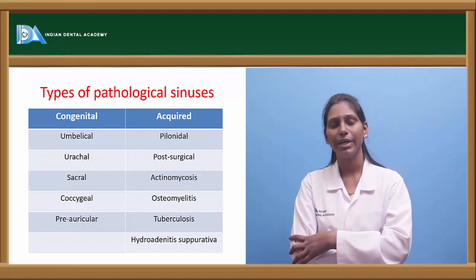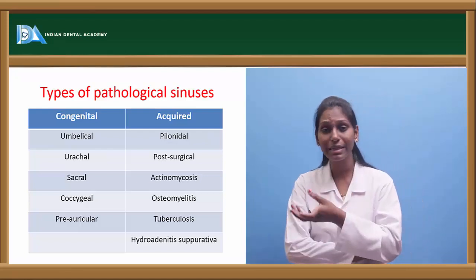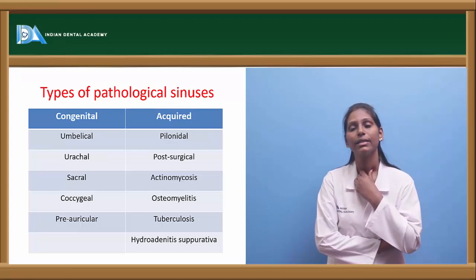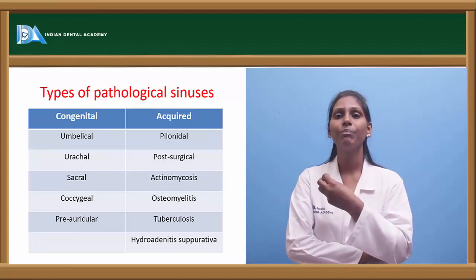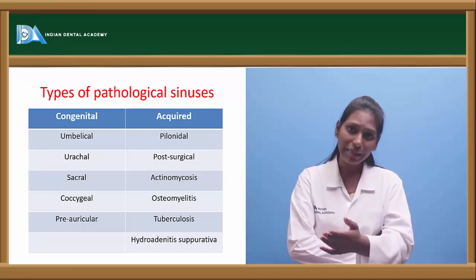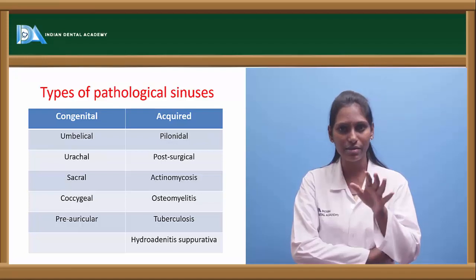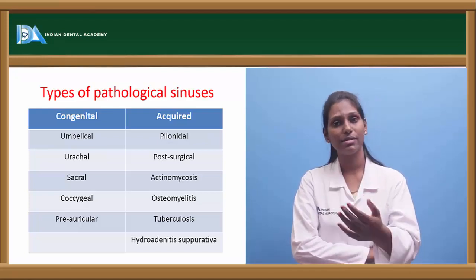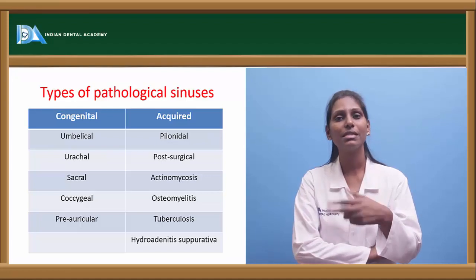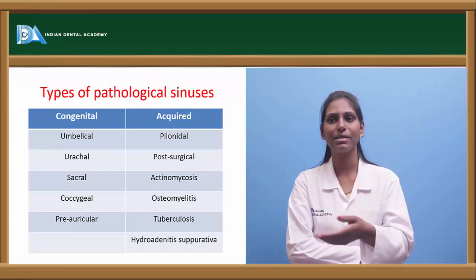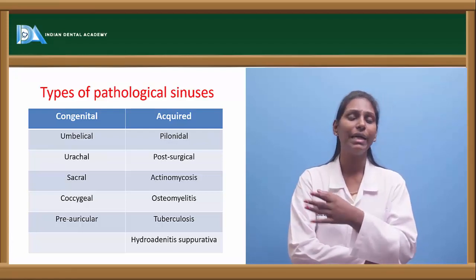Hidradenitis suppurativa is caused by an abnormality in the apocrine sweat glands. Because of this abnormality, suppurative lesions form, and the sinus opening is chronic in nature — it does not heal spontaneously due to recurrent infections. Treatment with tetracycline is usually very helpful in case of hidradenitis suppurativa.